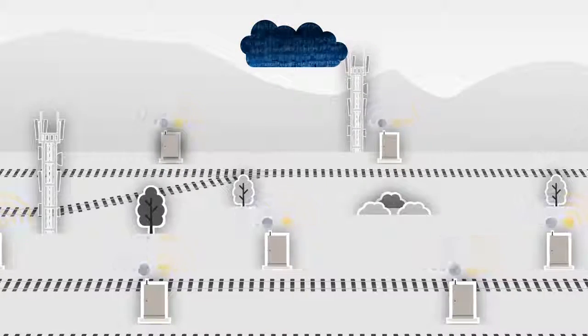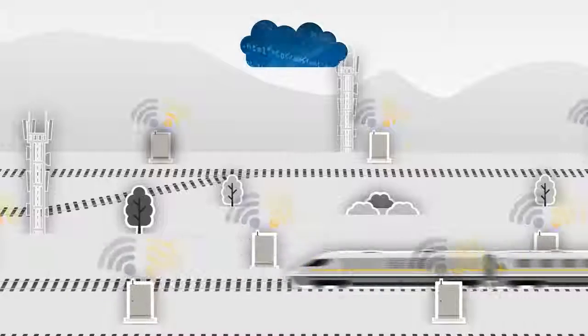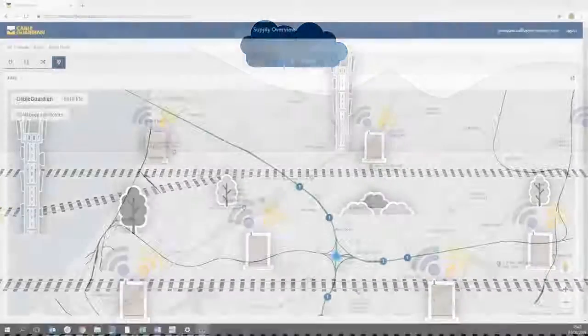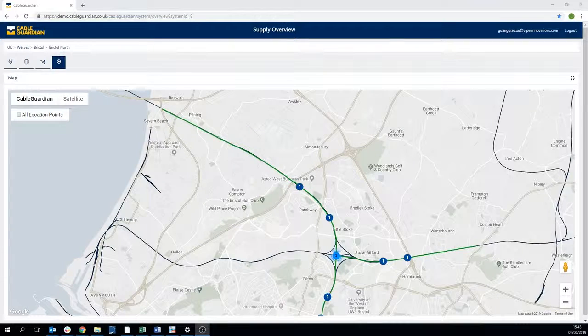Each unit transmits its measurement data via secure internet connection to the cloud-hosted Cable Guardian data storage and analytics system, where the cable integrity information and details of any faults are displayed in a user-friendly format.